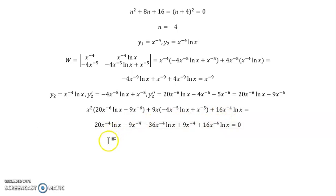What could we combine? Well, negative 9x to the 4th and positive 9x to the 4th are the same but opposite sign, so they cancel. And then we have positive 20 and positive 16 which is positive 36 and minus 36. And they're all the same x to the negative 4 natural log of x, and so they also cancel. And they do in fact leave me with 0 as to be expected.